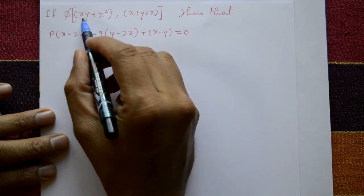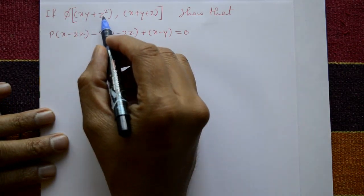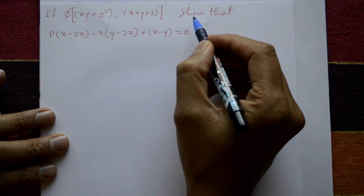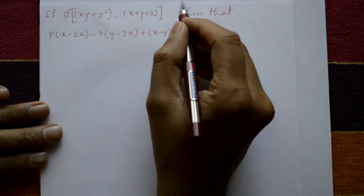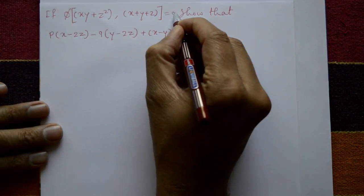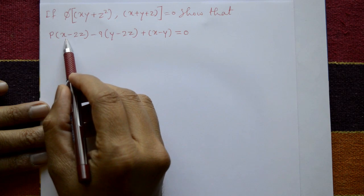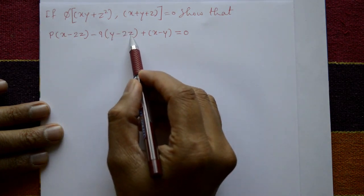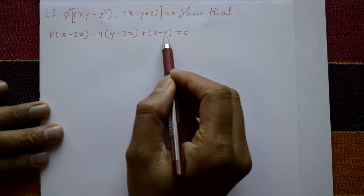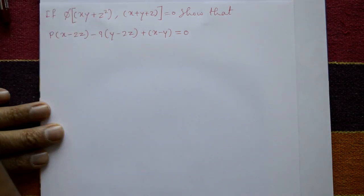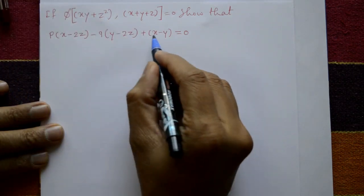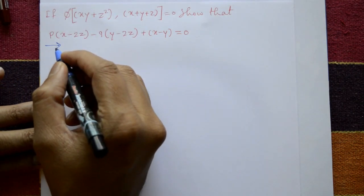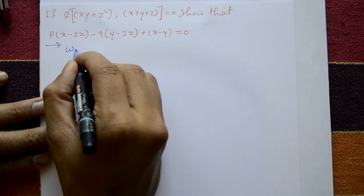If φ(xy + z², x + y + z) = 0, show that p(x - 2z) - q(y - 2z) + (x - y) = 0. Prove this. Okay, now solution.